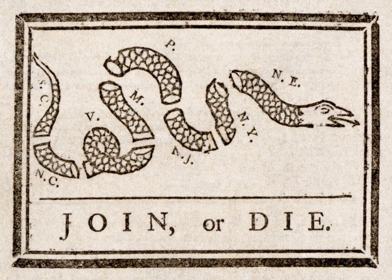The Thirteen Colonies had very similar political, constitutional, and legal systems and were dominated by Protestant English speakers. They were part of Britain's possessions in the New World, which also included colonies in Canada, the Caribbean, and the Floridas.